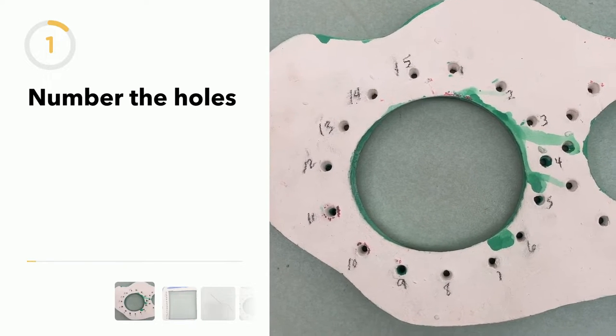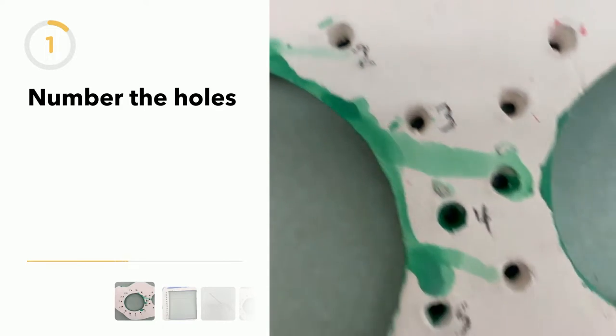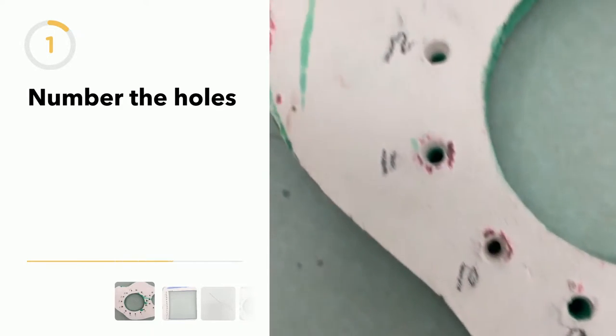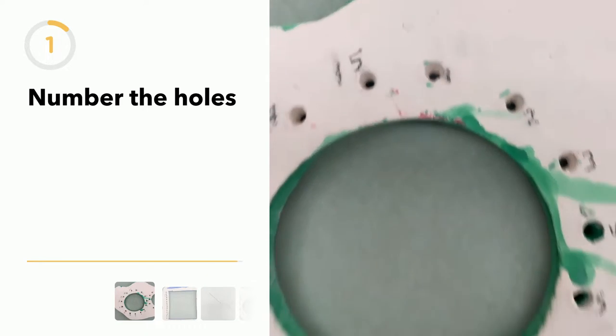Label. Use a pencil and just start at the top and go all the way around. Remember, it should be an odd number if you have a circle.